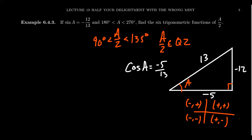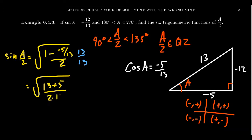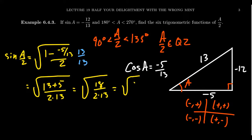Now let's compute sine of a/2. Since a/2 is in the second quadrant, sine is positive. Using the half-angle identity: sine of a/2 equals the square root of (1 minus cosine a) over 2, with cosine a equals negative 5/13. We get the square root of (1 minus (negative 5/13)) over 2. Multiplying top and bottom by 13: square root of (13 plus 5) over 26, which is square root of 18/26. Simplifying 18/26 to 9/13: since 9 is a perfect square, sine of a/2 equals 3 over the square root of 13.